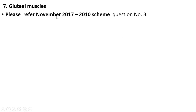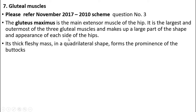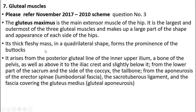The gluteal muscles. This has also been referred to in 2017, 2010 scheme, question number 3. The gluteus maximus is the main extensor muscle of the hip. It is the largest and outermost of the three gluteal muscles and makes up a large part of the shape and appearance of each buttock. It is a thick, fleshy mass of quadrilateral shape forming the prominence of the buttocks.